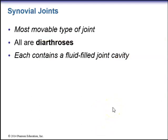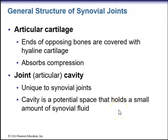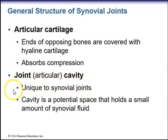The third structural type of joint is synovial joints — the most movable type. All synovial joints are diarthroses. Each synovial joint contains a fluid-filled joint cavity, which is unique to synovial joints. The ends of opposing bones are covered with articular cartilage — hyaline cartilage that helps absorb compressive forces. There is also a joint or articular cavity holding a small amount of synovial fluid.